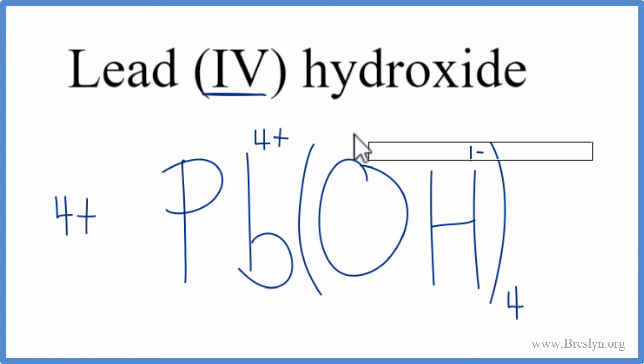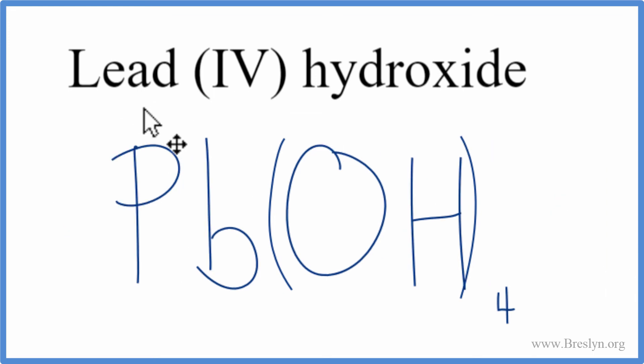Let's clean this up. And that's it, the formula for lead(IV) hydroxide, Pb(OH)₄. This is Dr. B, and thanks for watching.